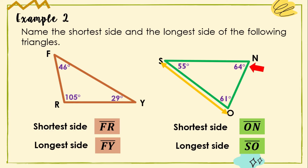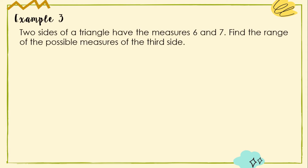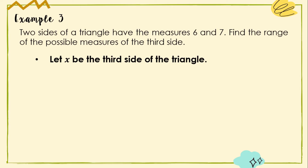We are done with Theorems 1 and 2. Let us now apply Triangle Inequality Theorem 3 with example number 3: two sides of a triangle have measures 6 and 7 — find the range of possible measures of the third side. We will look for the minimum and maximum values. Let X be the third side. Adding the two given measures: 6 + 7 = 13. By Theorem 3, the sum of any two sides must be greater than the third side, so 13 > X.